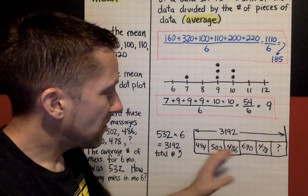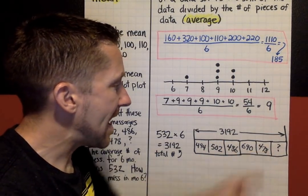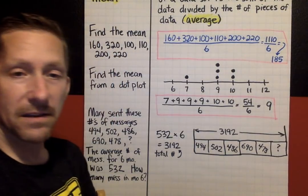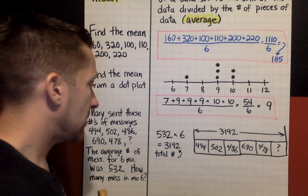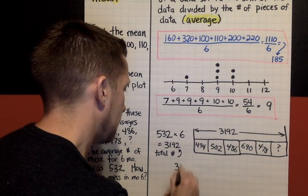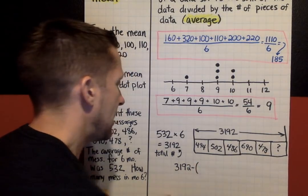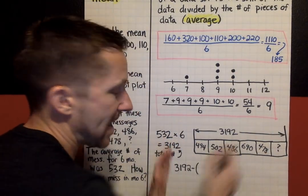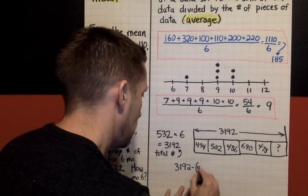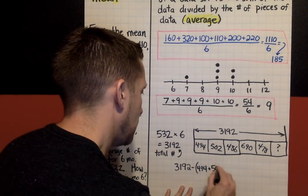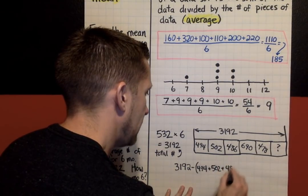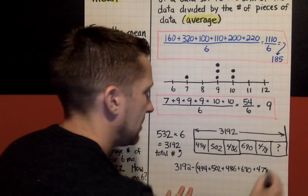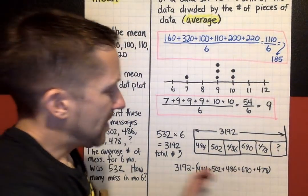I can use this model to find that. I want to take my total and I want to subtract all of these put together. That will give me how many messages she sent during month six. Here's what that looks like: 3,192 subtract. Now I want to add all these together into one group. I'm going to put parentheses here and I'm going to add them all up: 494 plus 502 plus 486 plus 690 plus 478. That's all one group, all five months put together.